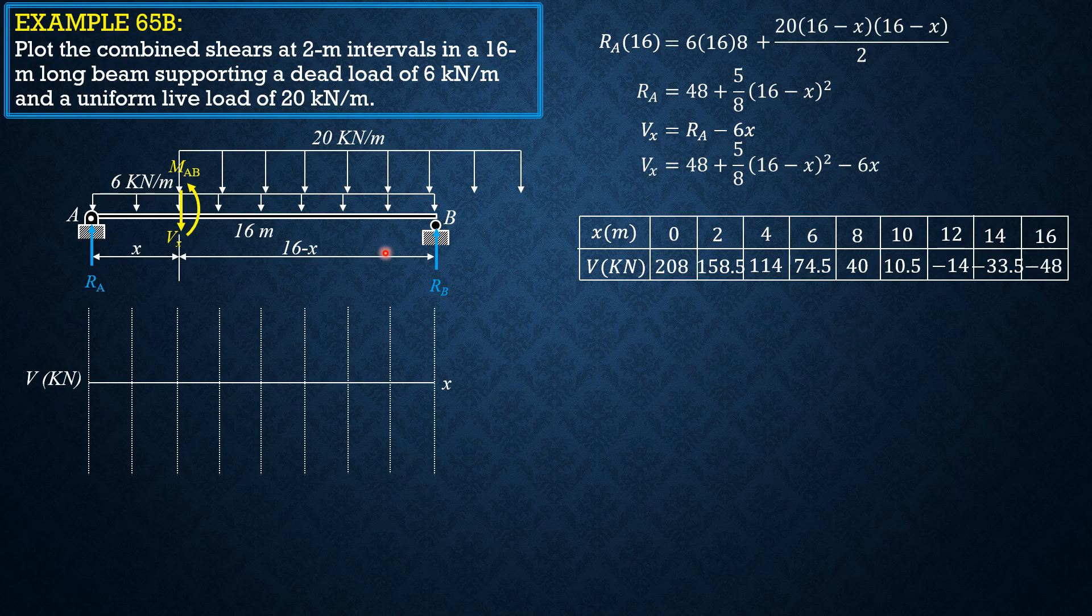So let's now plot. 208, and then it reduces to 158.5, that should be the slope decreasing. Then 114, then 74.5. When x is 8, 40. When x is 10, 10.5. When x is 12, negative 14 kilonewtons. When x is 14, negative 33.5. And when x is 16, negative 48 kilonewtons. So that's the variation of the shear at distance x.